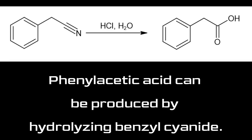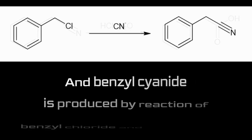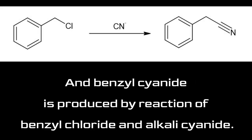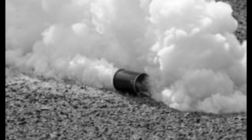Phenylacetic acid can be produced by hydrolyzing benzyl cyanide, and benzyl cyanide is produced by reaction of benzyl chloride and alkali cyanide. Benzyl chloride and cyanide are tear gas and they are very toxic.